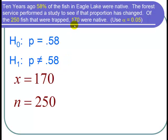We have that there were 170 native fish found. That's x equals 170. Out of the 250 fish that were trapped, that's a sample size n equals 250.